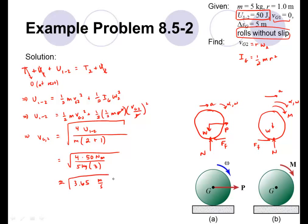The final velocity is approximately 3.65 meters per second. This is the resulting velocity in both cases — both for the applied force P and the applied moment M. That brings us to the conclusion of this example.